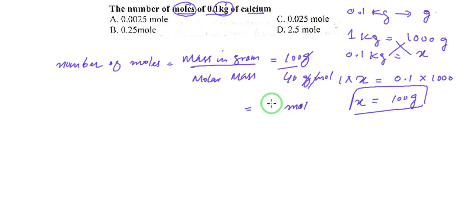And once you divide 100 over 40, you will get 2.5, so 2.5 moles. So the right option is option number D. Thanks for watching. For more videos, stay connected with I Am Chemist.